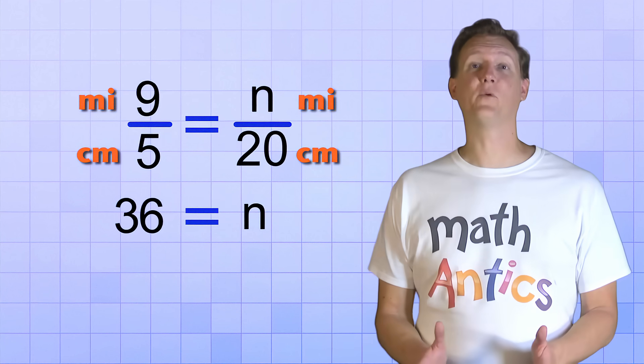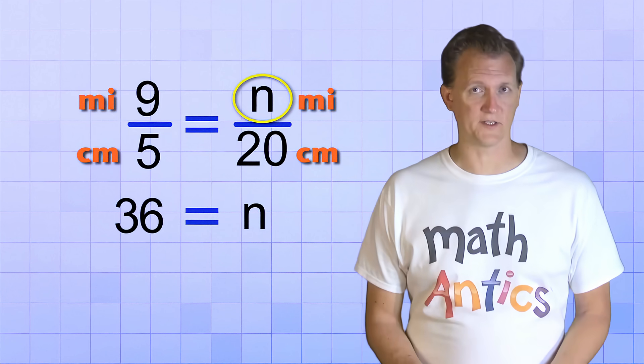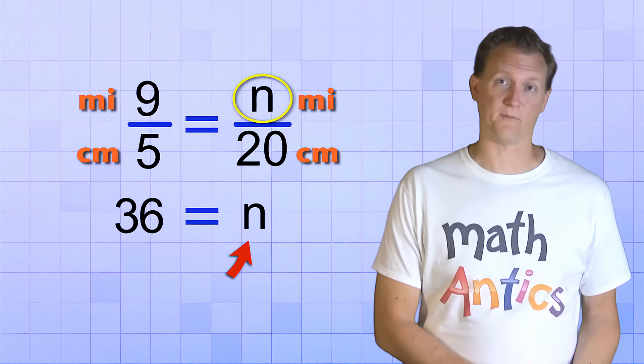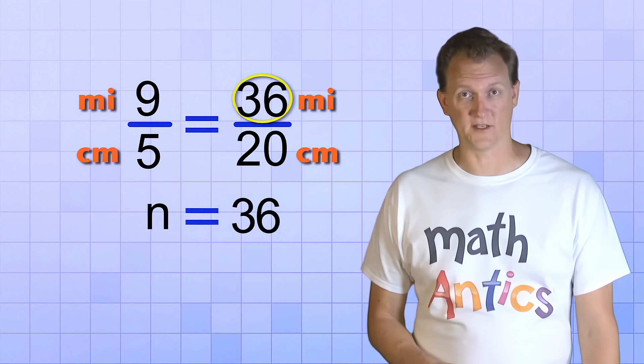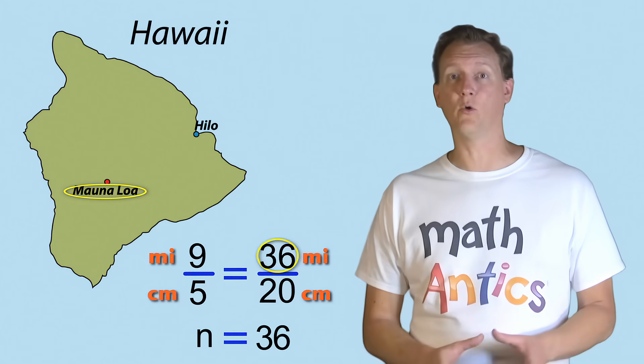There. Now we know what the unknown value in our proportion is. 36 equals N, which is the same as N equals 36. That's the number of miles it is from the volcano Mauna Loa to Hilo.